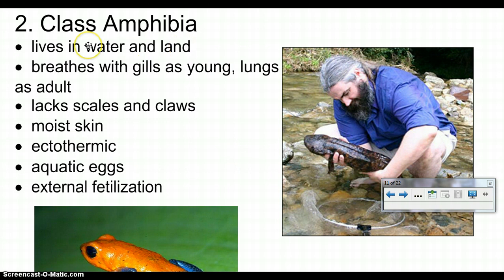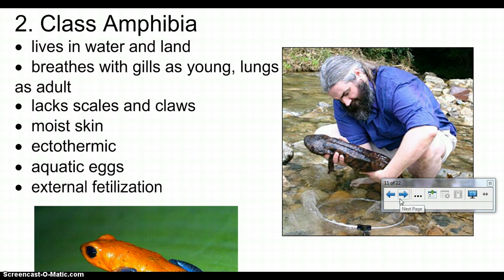Amphibians are the second group. They live in water and on land. They breathe with gills when young and use their lungs as adults. They lack scales and claws and have soft, smooth, moist skin, which they also use for breathing. They're ectothermic — cold-blooded. They lay eggs in water and are externally fertilized — the male puts his sperm on top of the eggs to fertilize them outside of the body.